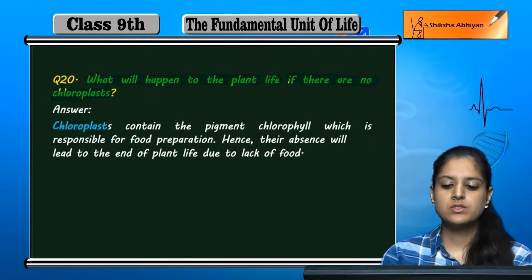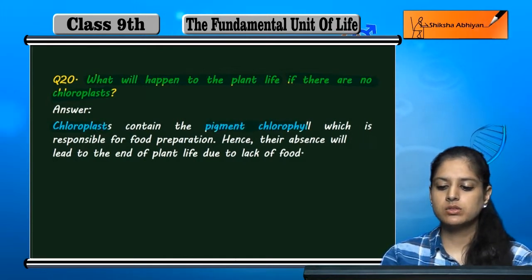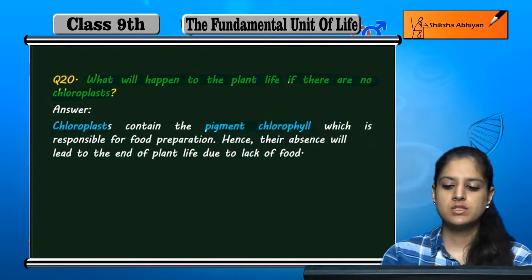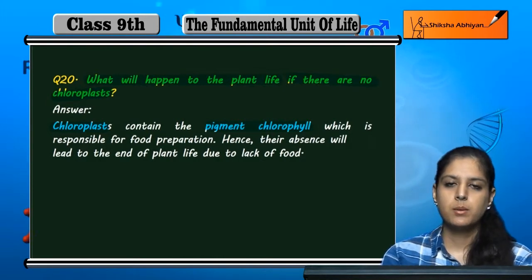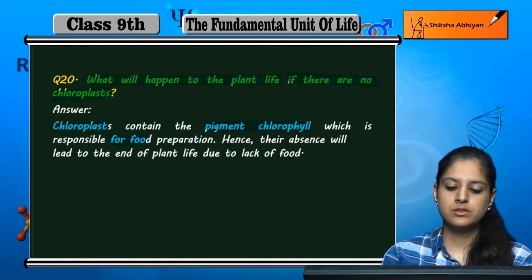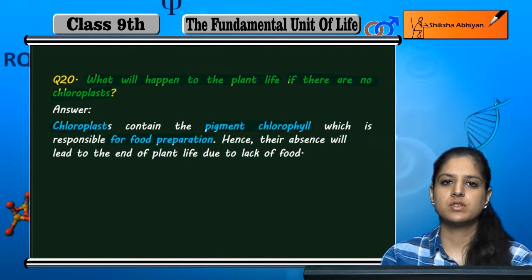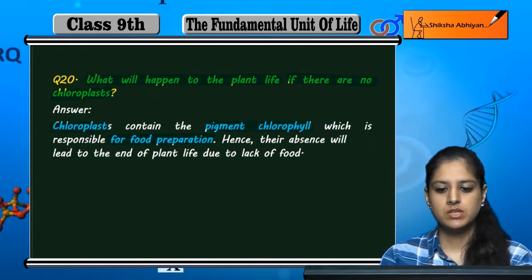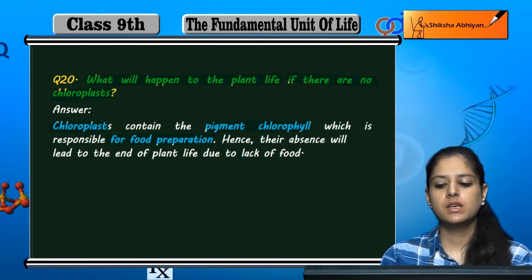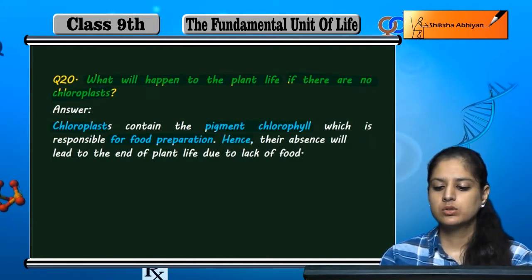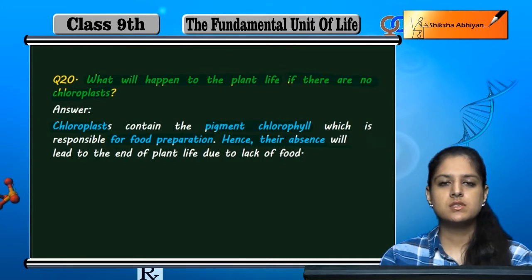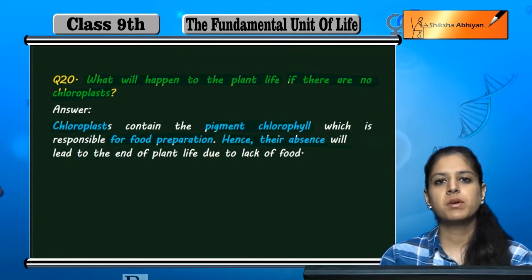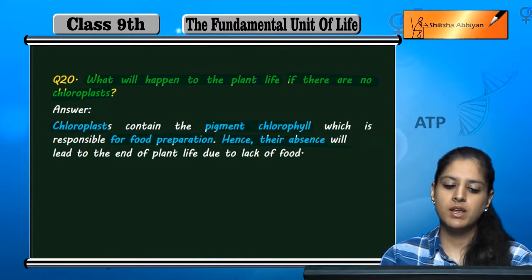Chloroplasts contain a green color chlorophyll, which prepares food through the process of photosynthesis. If there are no chloroplasts, then there will not be food prepared. If there is no food prepared, then there will not be food for plants.